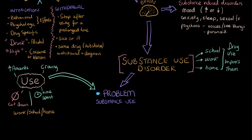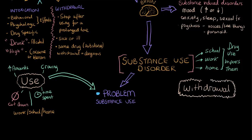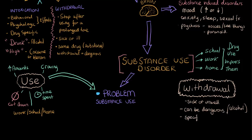A second factor, apart from use, is the presence of withdrawal — something we talked about earlier. This happens after you stop using the drug following prolonged or sustained use, and you can feel pretty sick or unwell, with different symptoms depending on the drug. This suggests that physiologically, your body is dependent on the drug. Withdrawal can be dangerous — for example, alcohol withdrawal can cause seizures and potentially death. Withdrawal symptoms are specific to the substance, and the presence of withdrawal suggests that you have a problem.